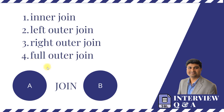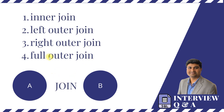In the full outer join, all the data from Table A and all the data from Table B will be extracted in the select query. There are also two more types of joins — self join and cross join — and I'll be making a separate video for those.